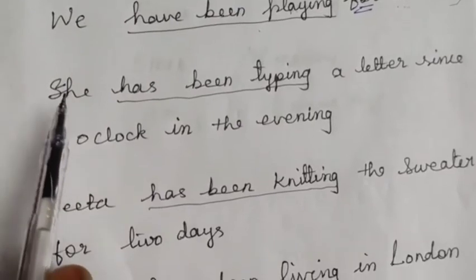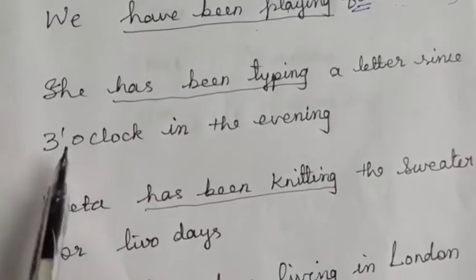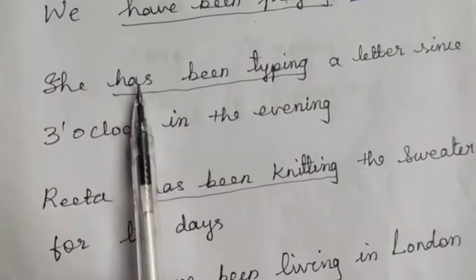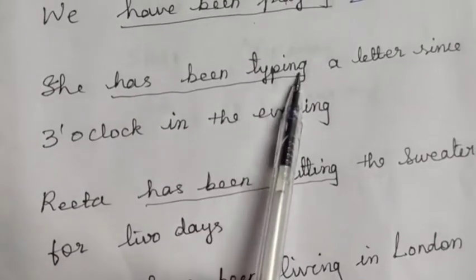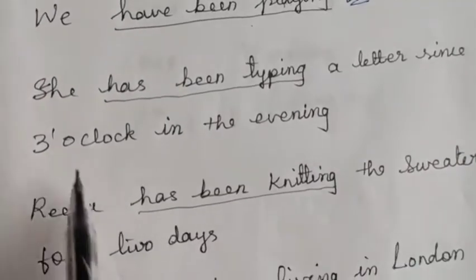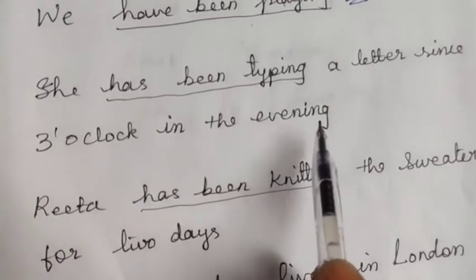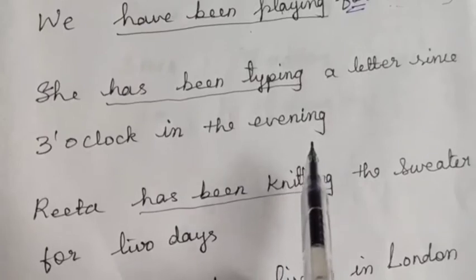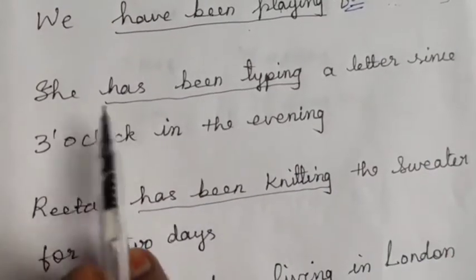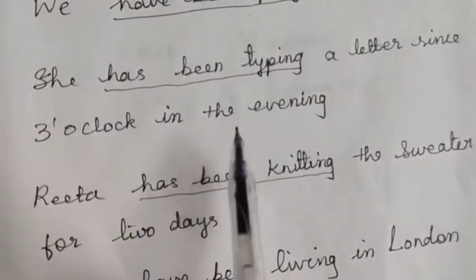Next example: 'She has been typing a letter since 3 o'clock in the evening.' 'She' is singular, so we use 'has plus been plus typing'. With 'since', a specific point of time — 3 o'clock — is given. The action of typing started at 3 o'clock and is still continuing.